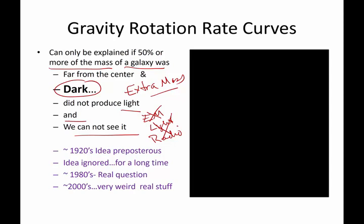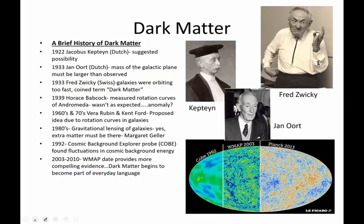Now, Vera Rubin was not the first one to propose this. The idea was first proposed back in the 1920s. After her work got published in the 1980s, people started going, huh, I wonder what's going on. And by the 2000s, in the last 20 or so years, it is now something that is moderately accepted. This is the way it is, and there is dark matter out there.